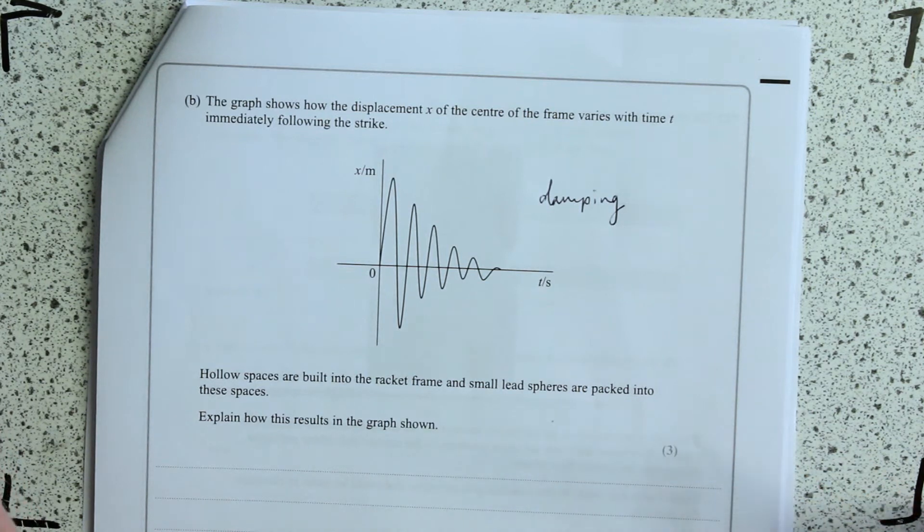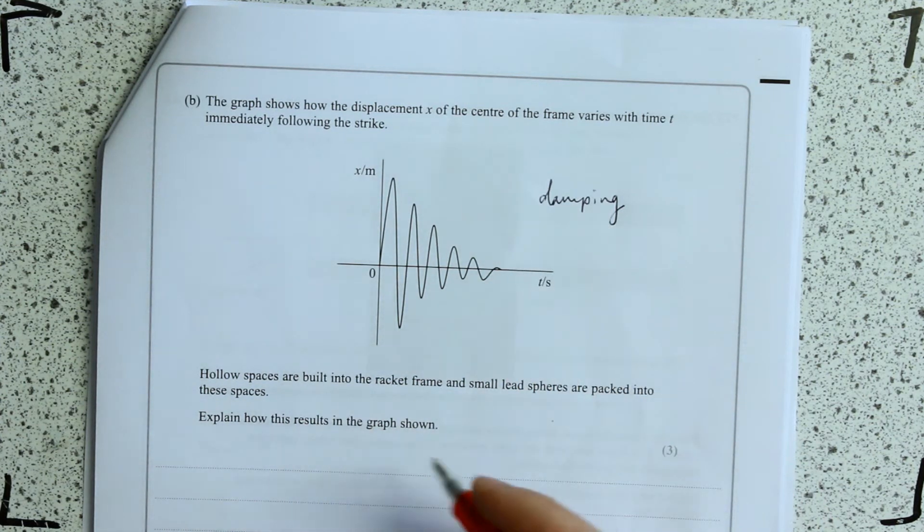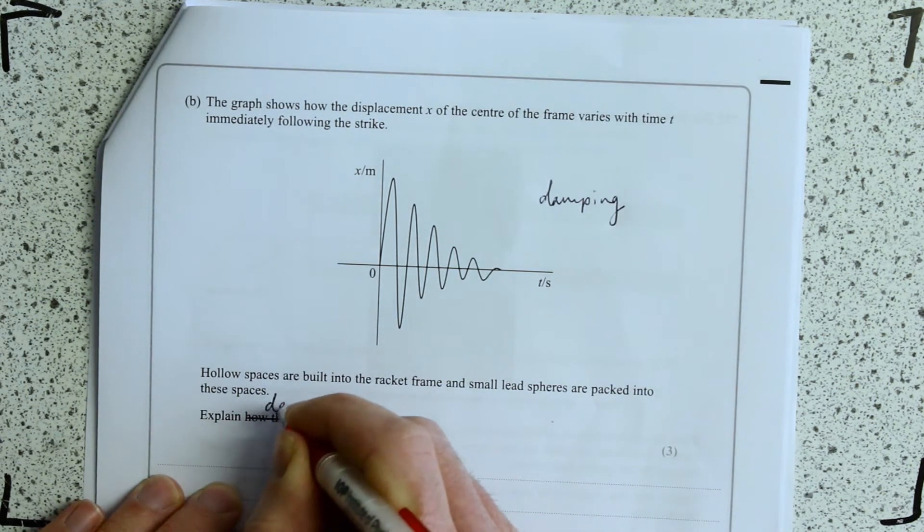I didn't know that was a feature of tennis racket design, actually. I don't know if my racket's got that, or if it's a new thing. But anyway, explain how this results in the graph shown. So if you've seen that graph and you've recognised damping, then really this question might as well say explain damping.